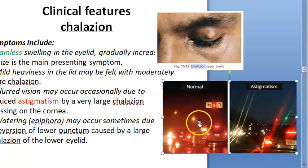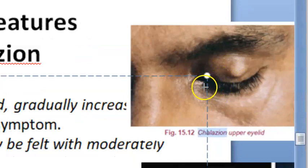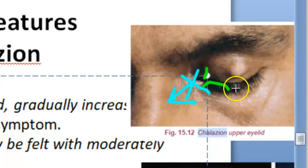The chalazion can also cause aversion of the lower puncta. When the lower puncta is everted, drainage of tears is impaired. Since tears cannot exit via the lacrimal sac, the person will develop epiphora — it will look like the chalazion patient is always crying.